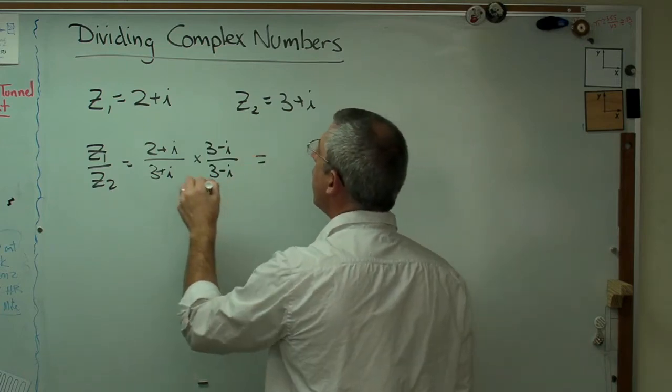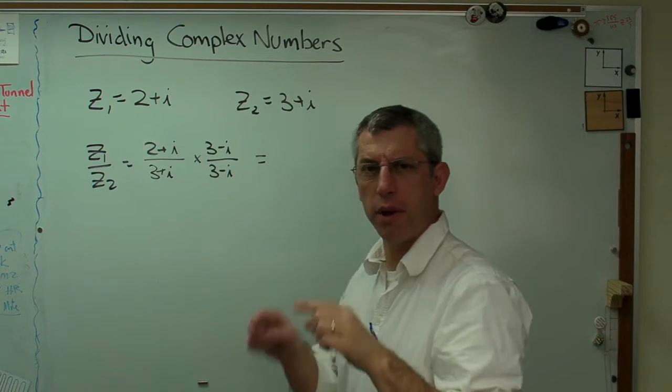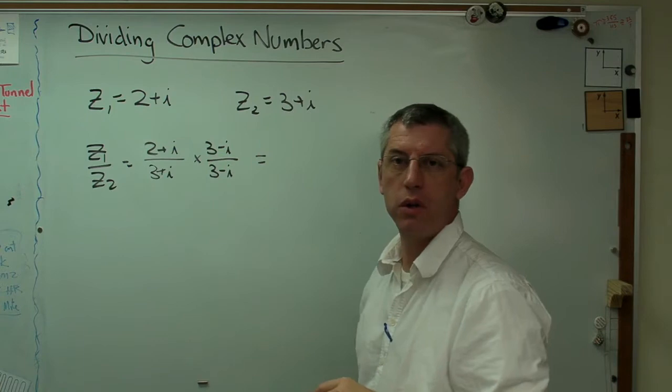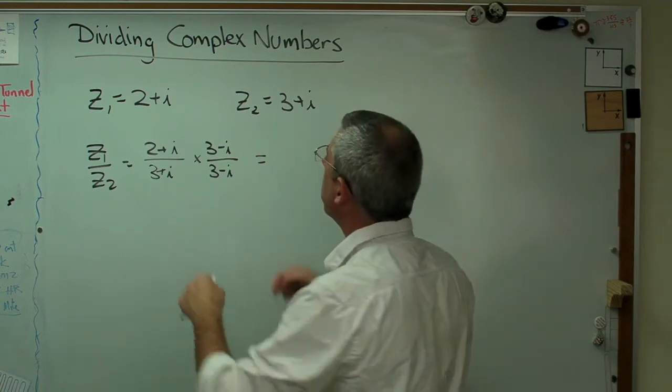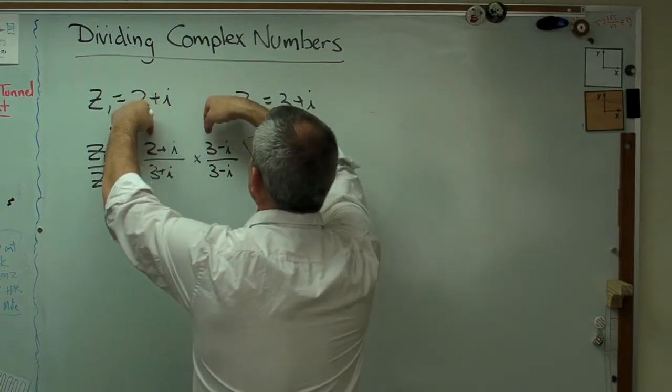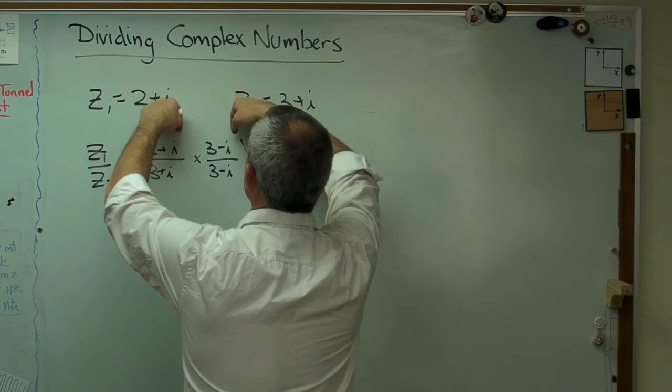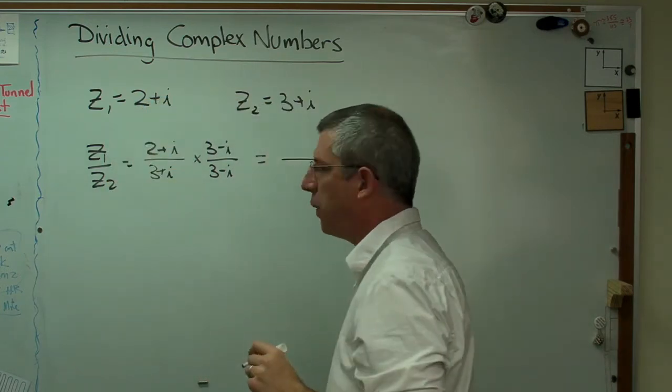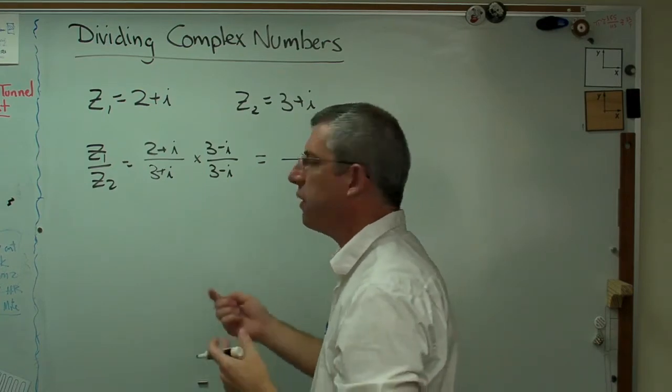So what I'm going to do now is, remember FOIL—remember that: first, outside, inside, last—the way we use to multiply polynomials? We're going to use that same approach to multiply this. So to multiply the first, then the outside, then the inside, then the last. And that's just the way of remembering: F-O-I-L. In English it spells a word.